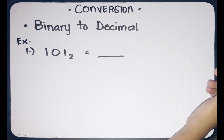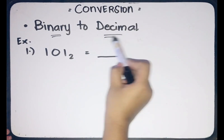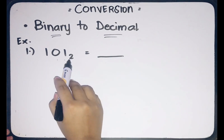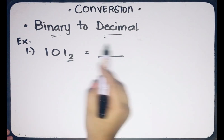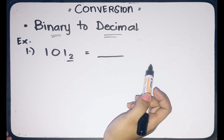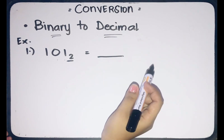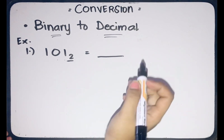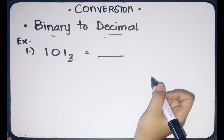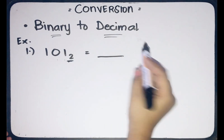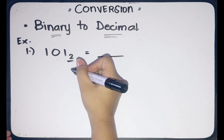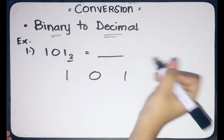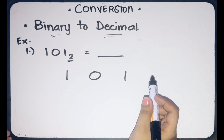We are now going to convert binary numbers to decimal. Let's take the binary number 101. When writing a binary number, we always write subscript 2 — otherwise, we'd read it as the decimal number 101. So in converting binary to decimal, the first thing we do is write the binary number: 1, 0, 1. Then we identify the place values.